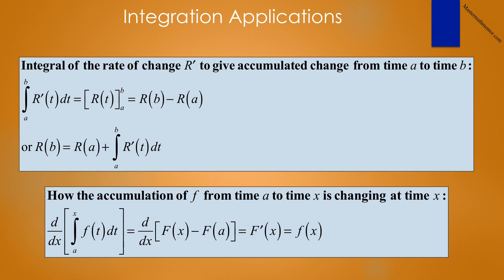Rule two is how the accumulation of little f from time a to time x is changing at time x. This rule states that the derivative with respect to x of the integral from a to x of f(t) dt equals the derivative with respect to x of capital F(x) minus capital F(a). Since capital F(a) is simply a constant, this equals capital F-prime of x, which is just little f of x.